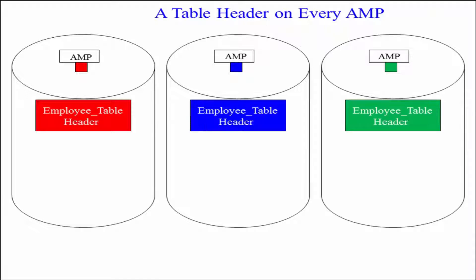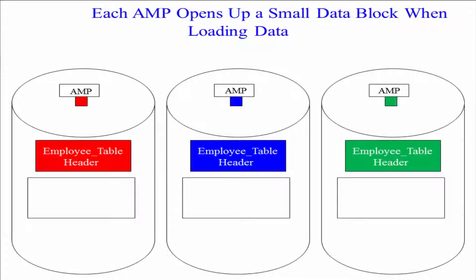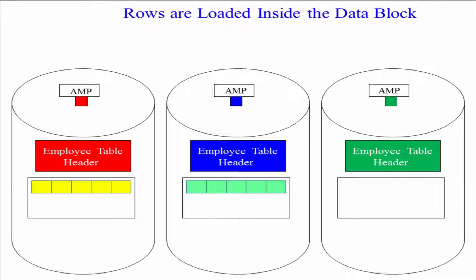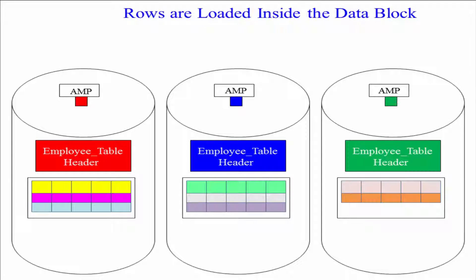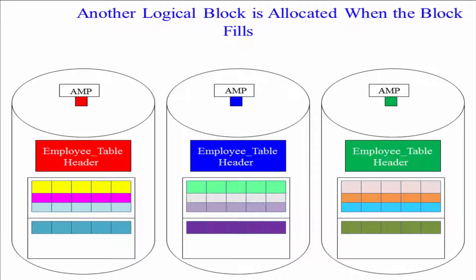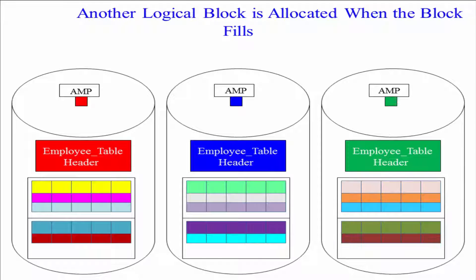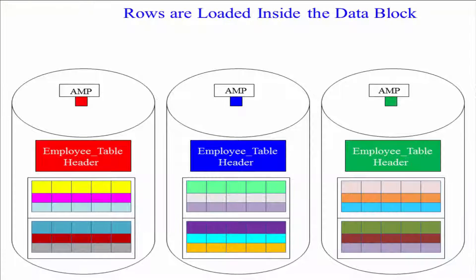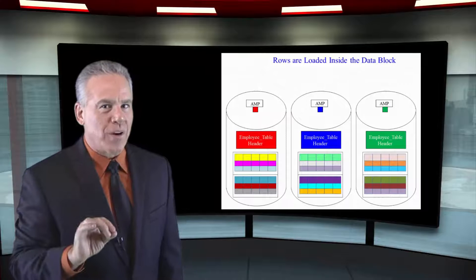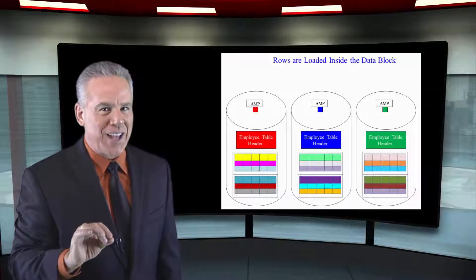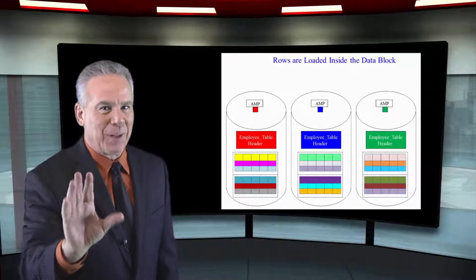When data is about to be loaded, each AMP opens a little data block and the rows are placed inside it, then more rows are added to that data block. Every single row is stored inside a data block.